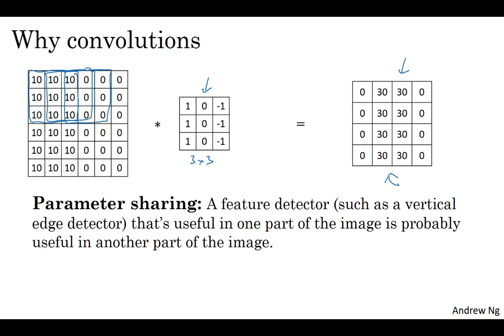So maybe you don't need to learn separate feature detectors for the upper left and the lower right-hand corners of the image. And maybe you do have a data set where the upper left-hand corner and the lower right-hand corner have different distributions, so they maybe look a little bit different, but they might be similar enough that sharing feature detectors all across the image works just fine.